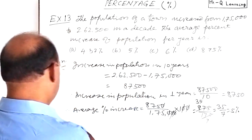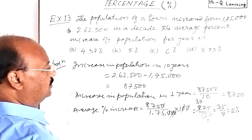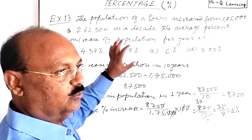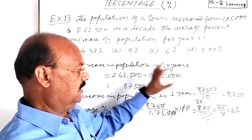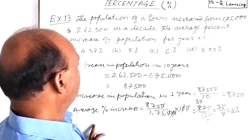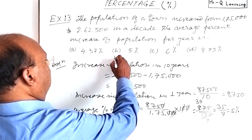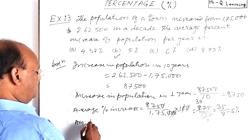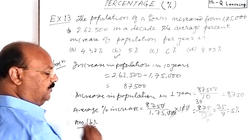So what does it mean? It means average population increase per year is 5 percent. Therefore, answer is B. Answer is option B.